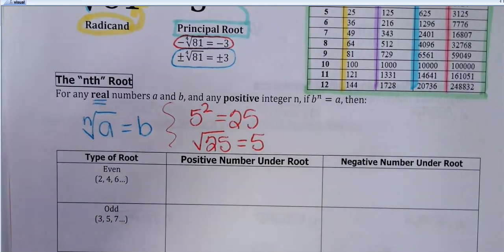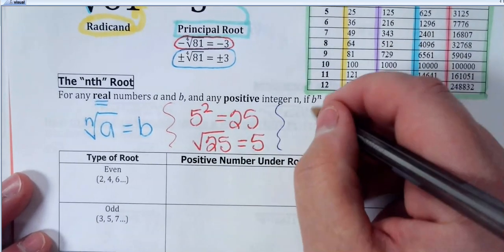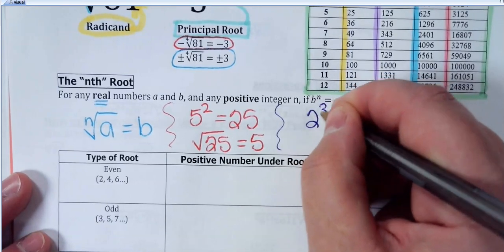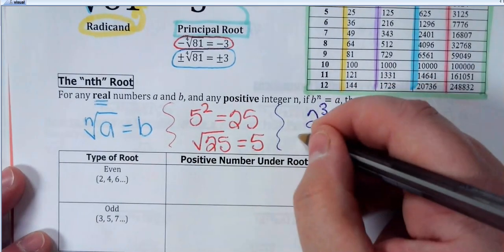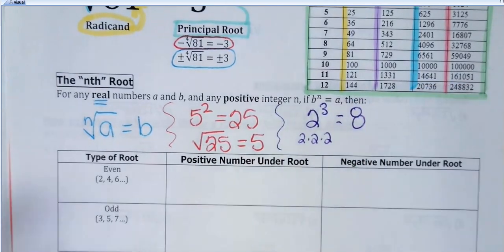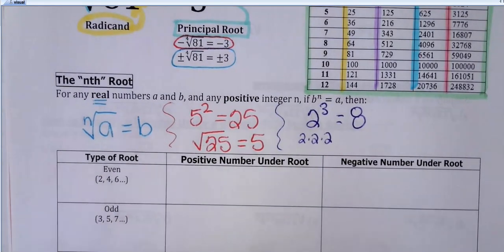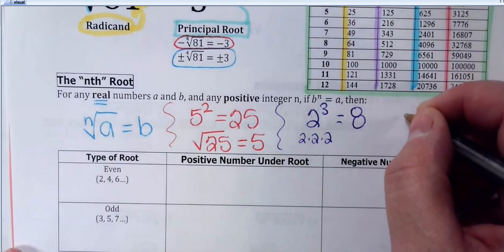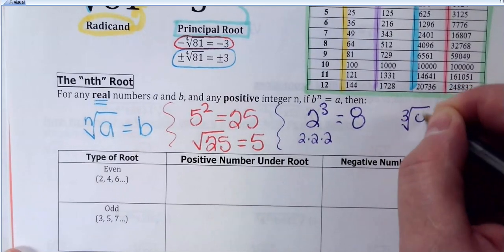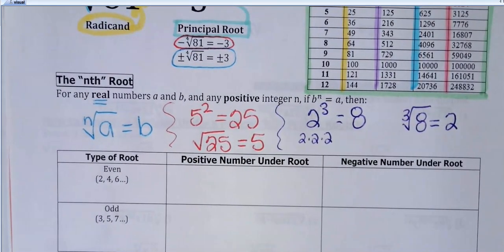Let me do one you're maybe not super familiar with. So if I had 2 to the third power, that means 2 times 2 times 2, which equals 8. If I change that into a root, what that would look like is: the third root of 8 is equal to 2. We're going to do third, fourth, and some fifth roots today as well.